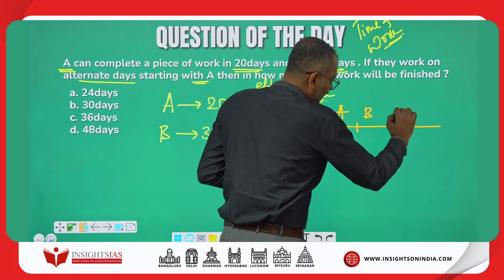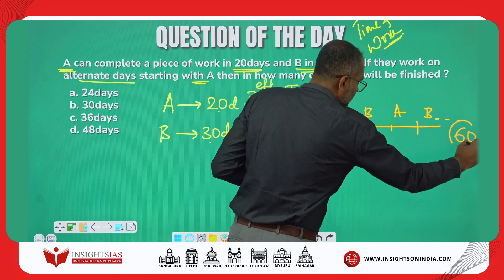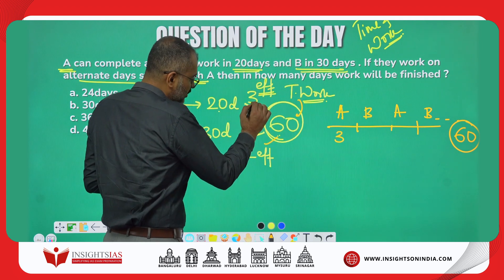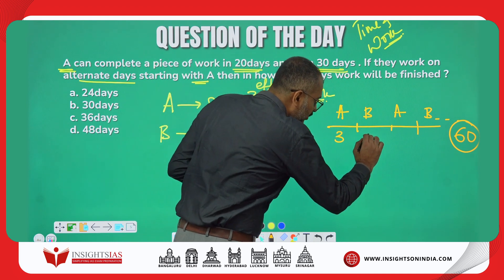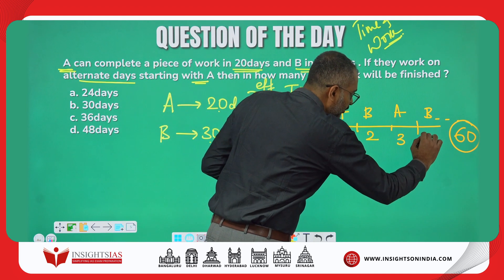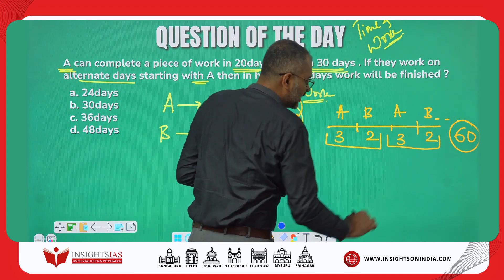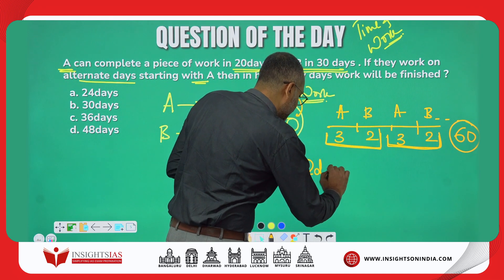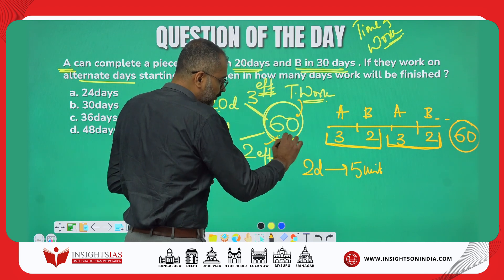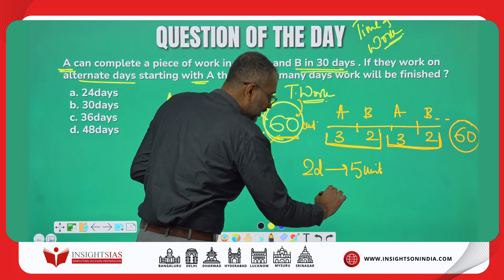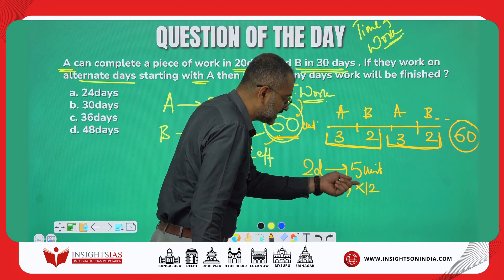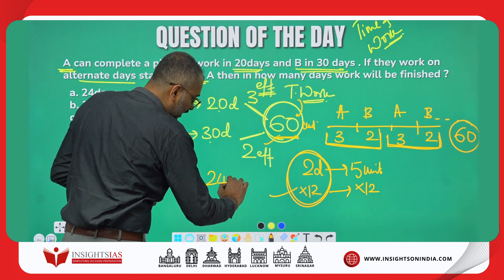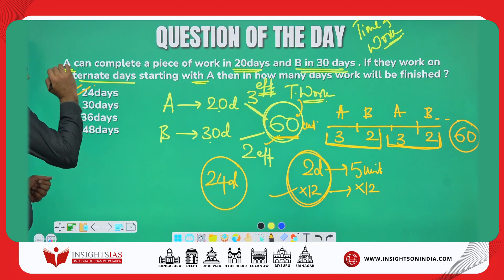First day A does 3 units, second day B does 2 units, continuing alternately until 60 units are completed. After every 2 days, 5 units are completed. To complete 60 units: 60 ÷ 5 = 12 cycles, and 12 × 2 = 24 days. So the answer is 24 days.